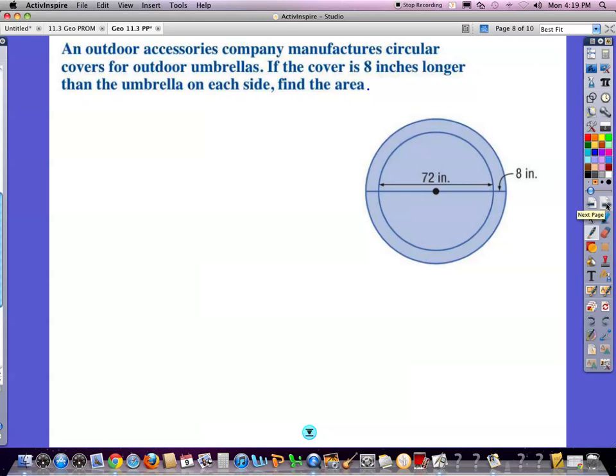Move it along. An outdoor accessories company manufactures circular covers for outdoor umbrellas. The cover is eight inches longer than the umbrella on each side. Find the area. Area equals pi r squared. I need a radius. My radius is from here to here. Well, 72 is from here to here. We cut that in half, I get 36. But then I still have eight. So 36 and eight is going to give me a radius of 44.